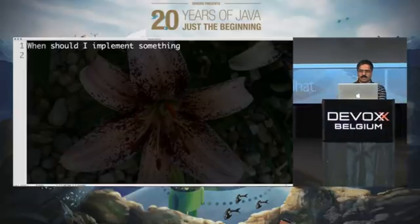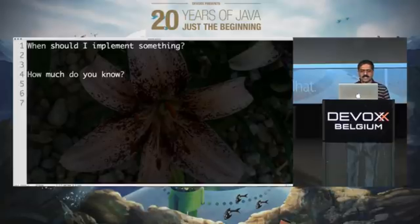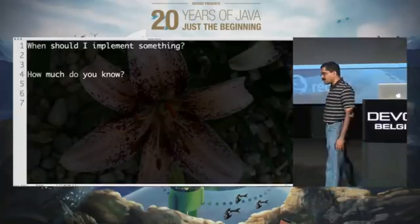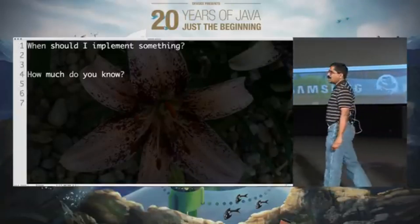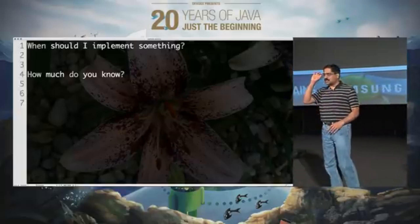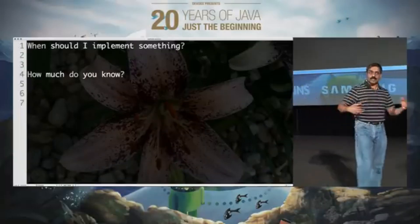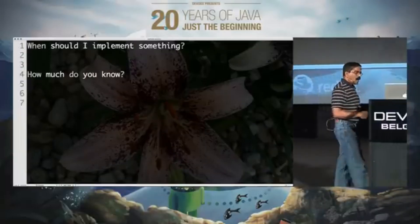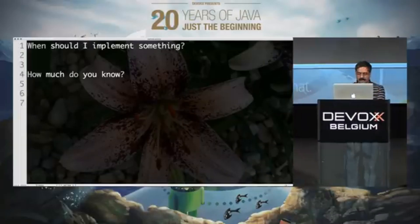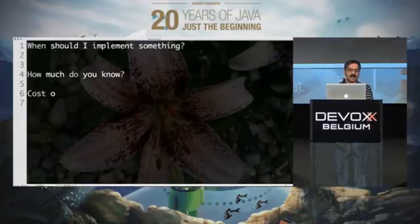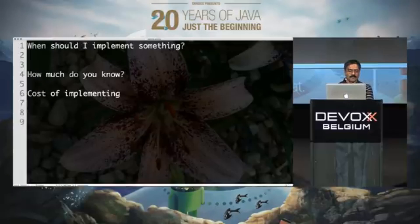When should I implement something? The first question I would ask is: how much do you know? This is a question we should be very realistic in asking, because a lot of times we think we know a lot of stuff, but once we start asking the details, we realize we don't know as much. So how much do you know about what you're implementing? And then the next thing is the cost of implementing that particular feature or code — do it now, or do it later.